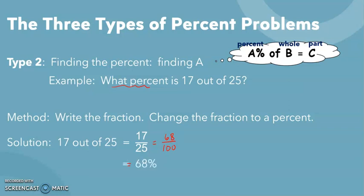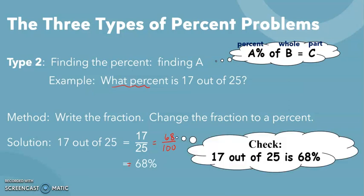It's going to come up here right away. 68%. Good enough. You double check. Is 17 out of 25 equal to 68%? Does that make sense?